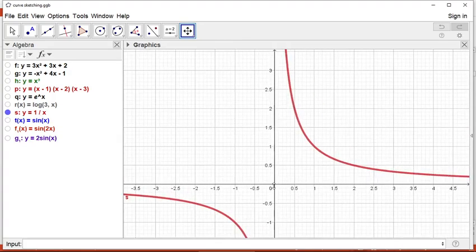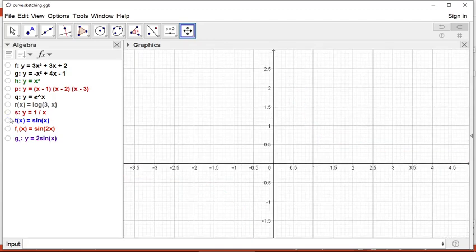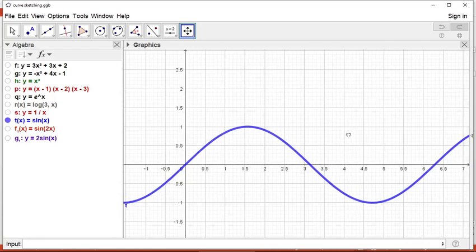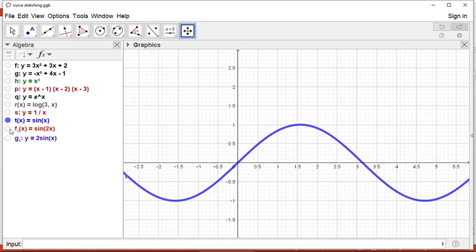This is how it looks. It is symmetric about the origin. It is an odd function but does not pass through the origin. For sin x, from 0 to pi by 2 it increases, then decreases to 3 pi by 2, then increases again. This is the sin function.